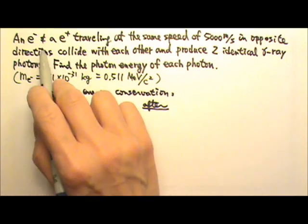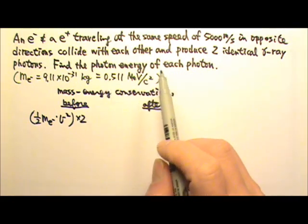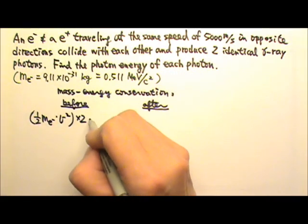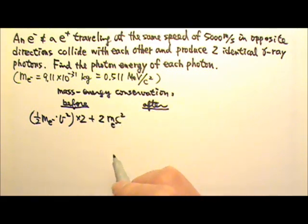And because they have the same mass and the same speed, we just have to multiply this by two to take care of the kinetic energy for both particles. And then we also have two mc squared of the electron, because again they have the same mc squared.